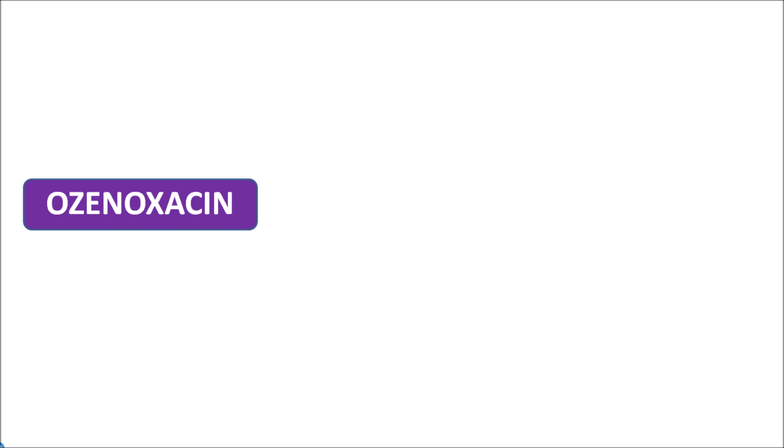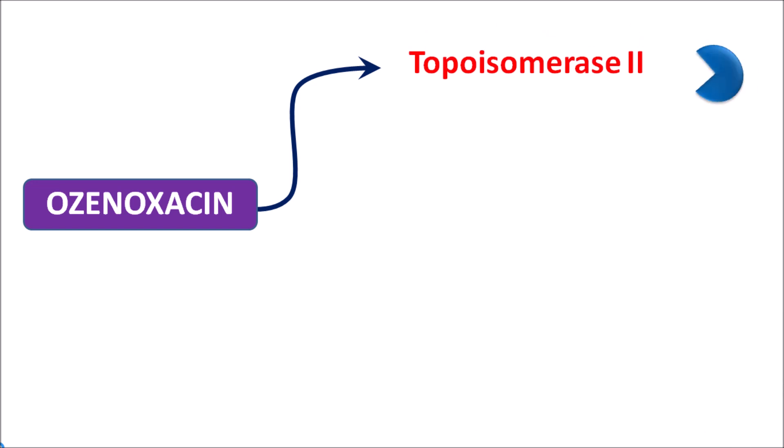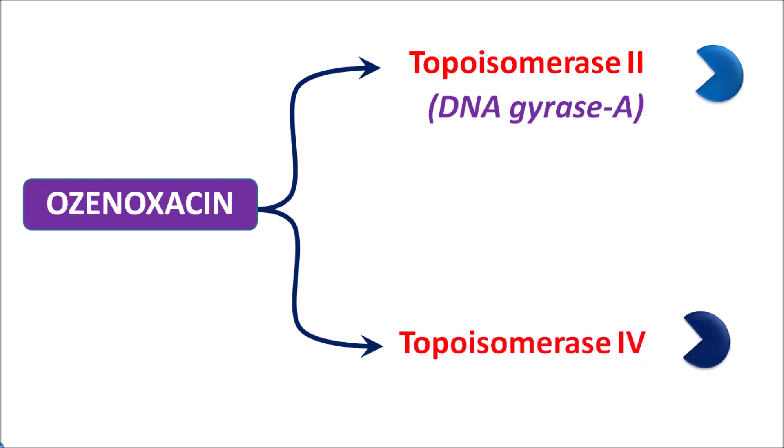First of all let us see how this drug acts. The main action of ozenoxacin is just like the fluoroquinolone antibiotics — this drug can block two types of enzymes. The first one is topoisomerase 2, an enzyme which can relieve the topological strain caused by the coiled structure within the DNA. This topoisomerase 2 is also called DNA gyrase A. Ozenoxacin blocks this enzyme, thereby inhibiting DNA replication. This is the coiled form of DNA called the positive supercoil, which is not suitable for DNA replication.